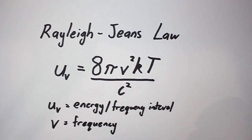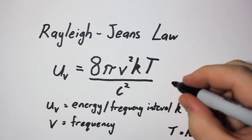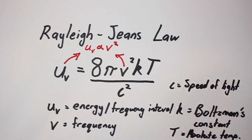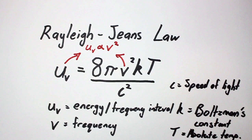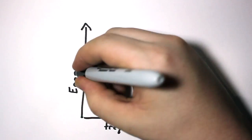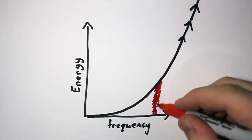The prediction suggested that an ideal object, a black body at a constant temperature, would emit energy proportional to its frequency squared, meaning that the energy it emits would increase exponentially as its average frequency increased.